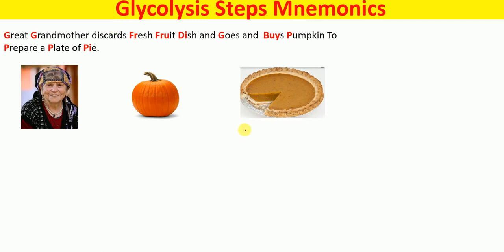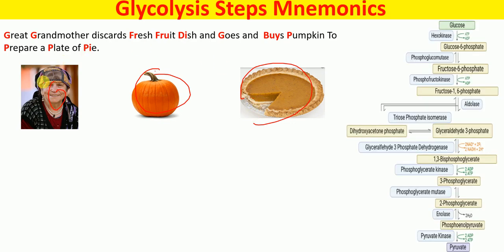To remember the steps of glycolysis, use this mnemonic: 'Great grandmother discuss fresh fruit dish and goes and buys pumpkin to prepare a plate of pie.' These three pictures you have to remember. Now let's discuss the steps.